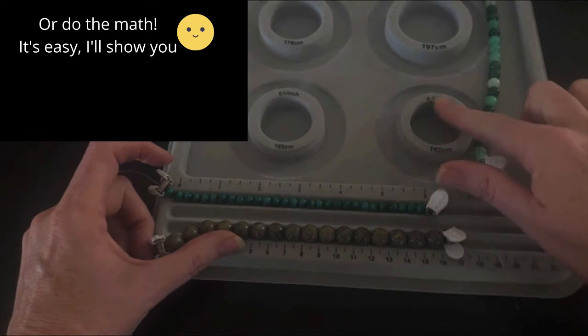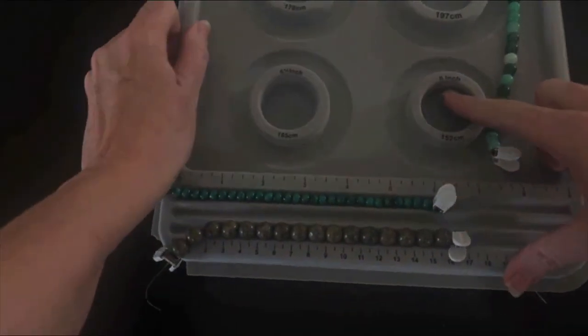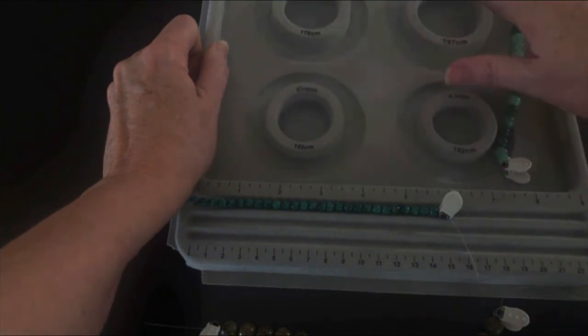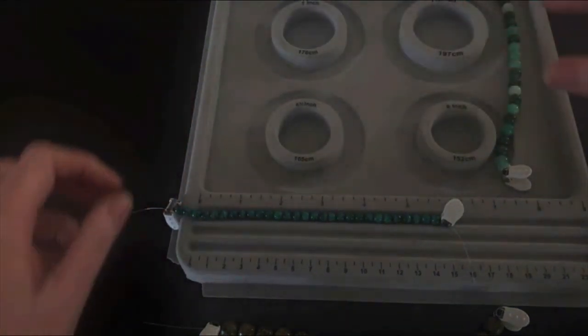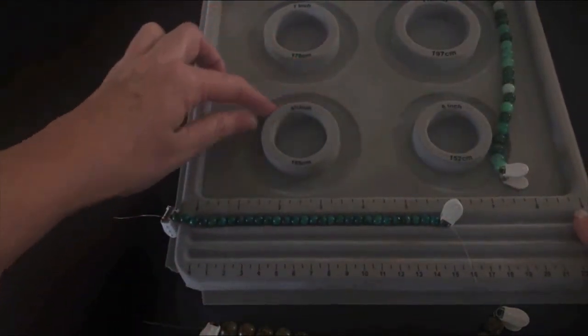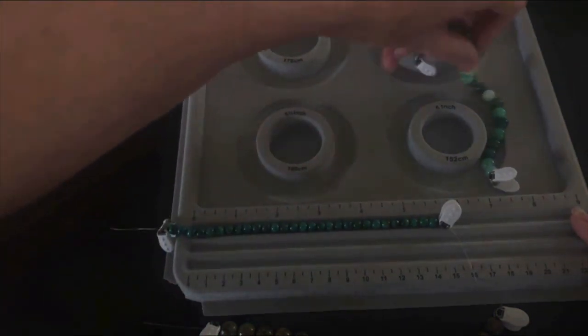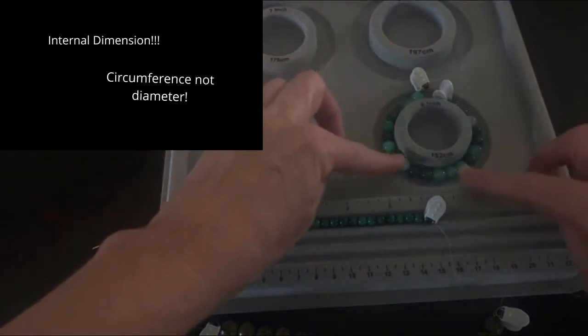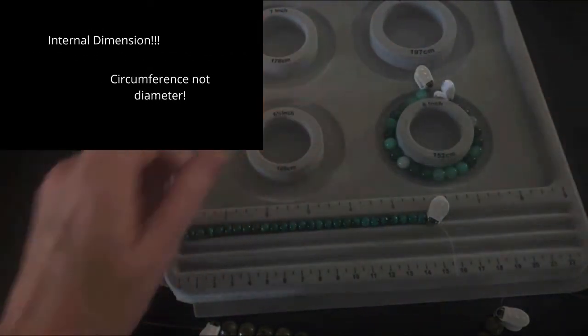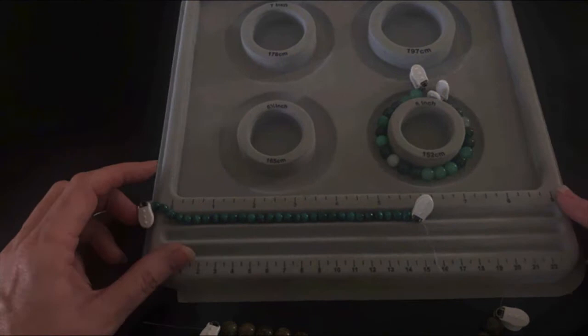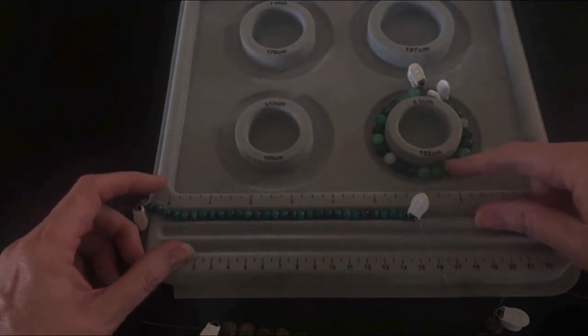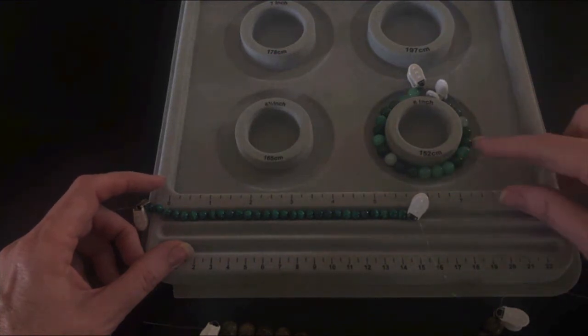The thing I really like about this style of beading board—and you might be able to see it says six inch here, six and a half, seven, and seven and three quarters inch up here—what this does is as you line your beads around, it's going to make sure that the inside diameter stays exactly the same no matter what size beads you have, or if you wanted to intersperse some larger beads in between.